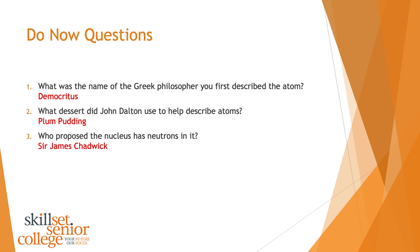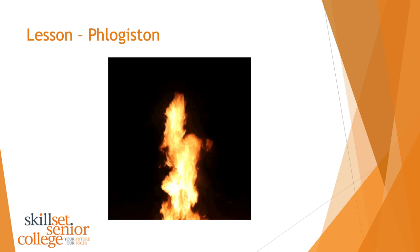In the last lesson we looked at the history of the atom and how our view has changed. I thought it'd be interesting to talk about something that fits into the advent of chemistry — how did modern chemistry come around and how did the theory change over time? So what we're talking about today is something called phlogiston.